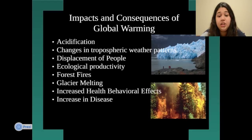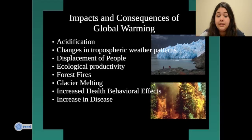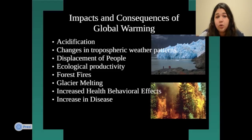There are different impacts and consequences of global warming. One of them is acidification — lakes become more acidic, and greenhouse gases absorbed into the atmosphere can also cause acid rain.